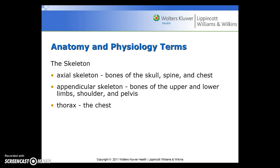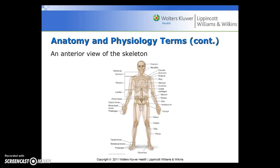The skeleton: the axial skeleton includes the bones of the skull, spine, and chest. The appendicular skeleton includes the bones of the upper and lower limbs, the shoulder and pelvis, and the thorax or the chest. Here you can see an anterior view of the skeleton.